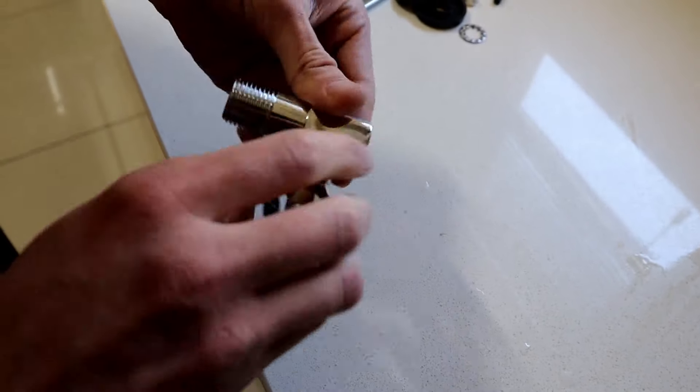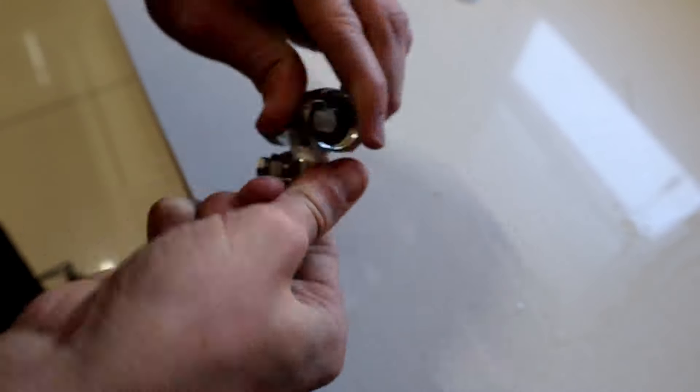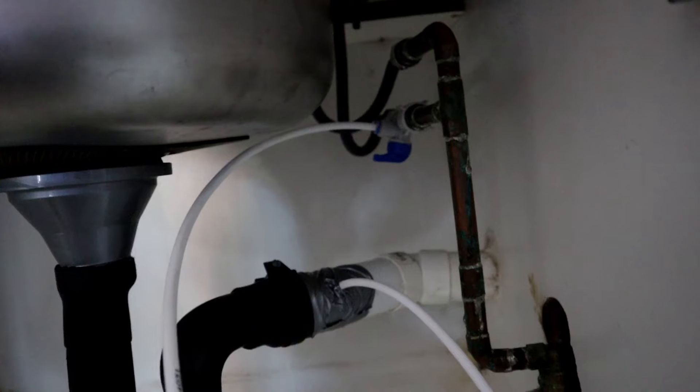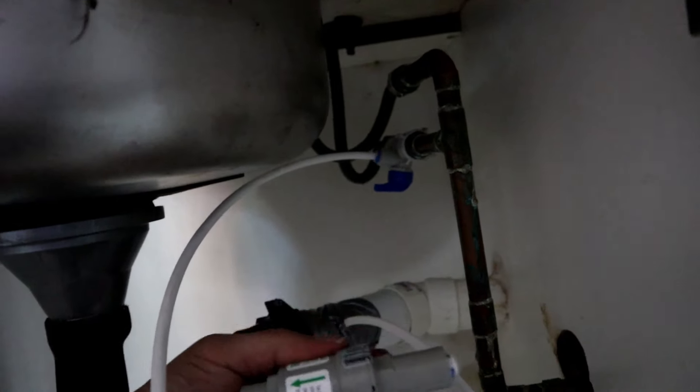Then for your supply connector, place thread sealing tape on the valve and screw it into the half inch or three quarter inch connection, and then you can fit it under the counter.